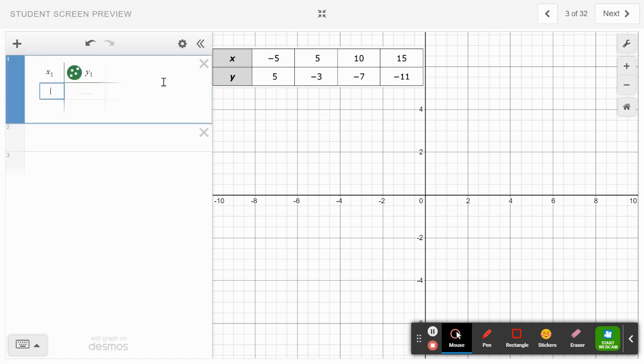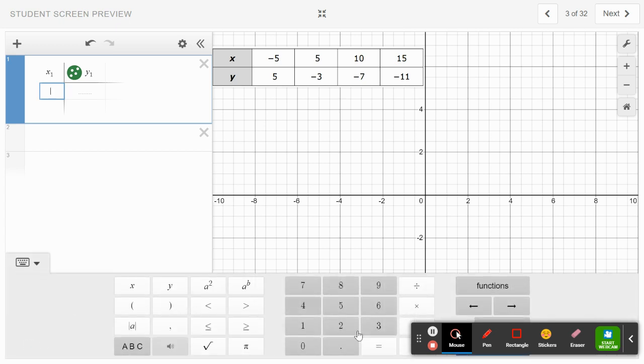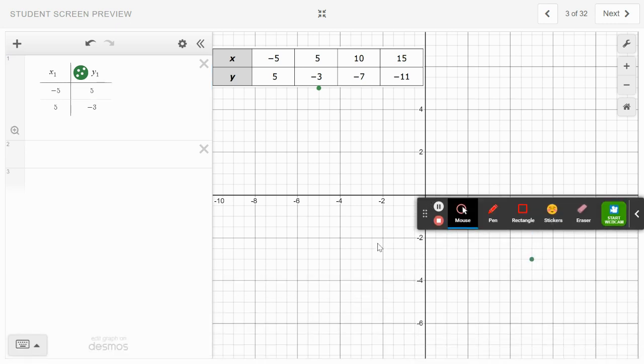I made a picture of my slide here. I press the plus sign and choose table. We're going to recreate this table in Desmos. Notice it has x1 and y1. The x values are negative 5, so you click your keyboard and type negative 5, which matches up with 5.